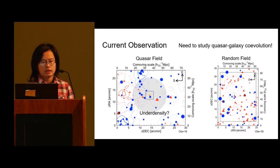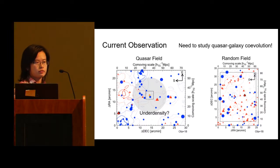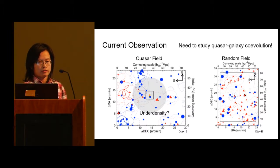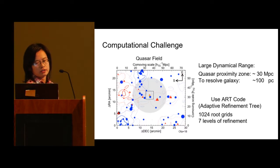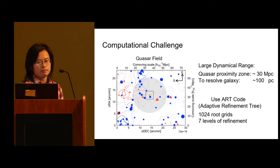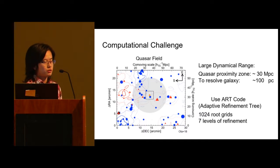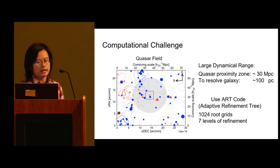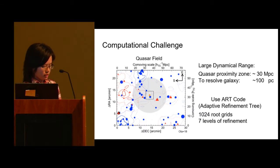In order to constrain the mass of the quasar host halo, we need to understand how this quasar feedback may impact galaxy formation. This problem is theoretically and computationally challenging because we have a large dynamic range. The proximity zone is 30 megaparsecs, and to resolve galaxies we need 100 parsec resolution. So there's an order of five dynamic range. To reduce the cost, we use our code which is an adaptive mesh refinement code.